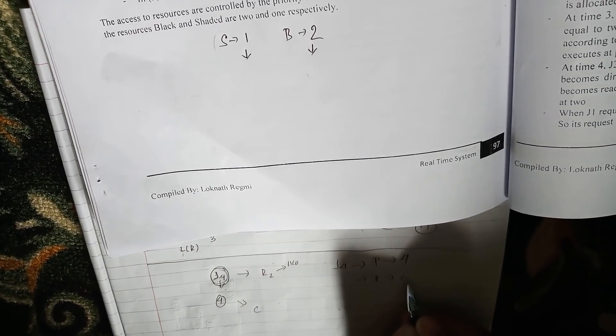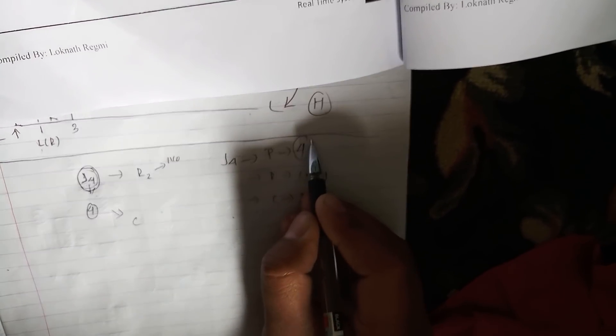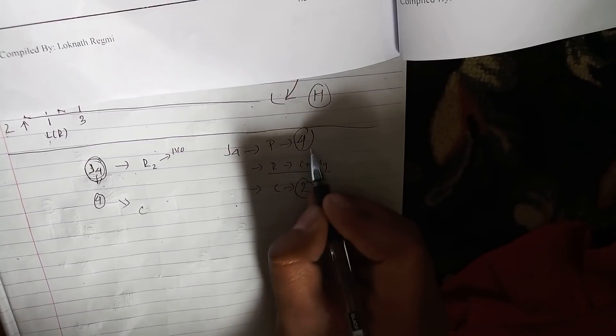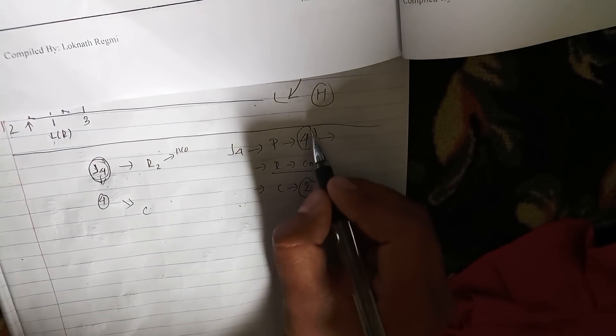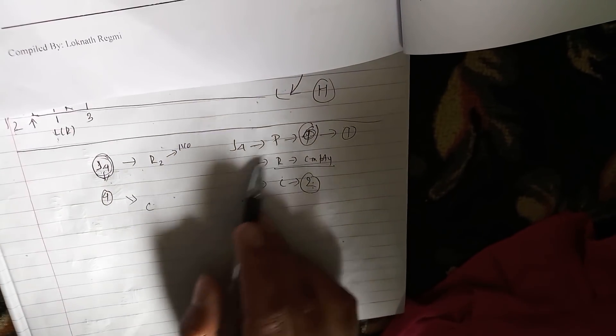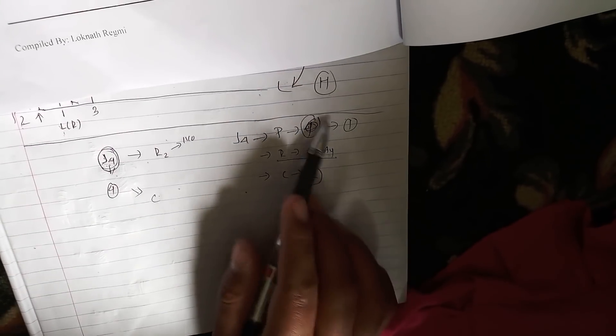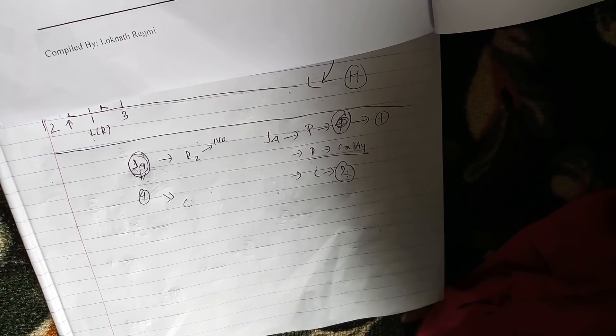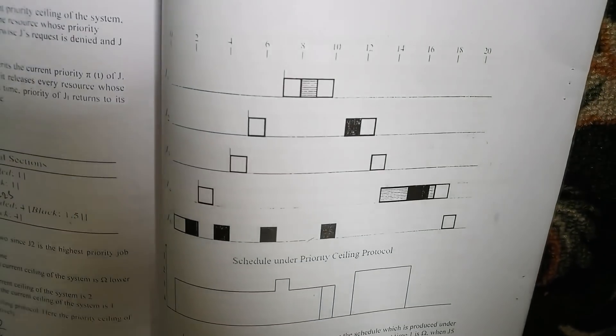The priority is 4 and the resources are empty and the current seal value is 2. That means the priority is 4 and the seal value is 2. That means 4 and 2 are empty and they can block it. This is priority 1 and R2 can be used, so the seal value is empty and it can block it. This is equal to 1.